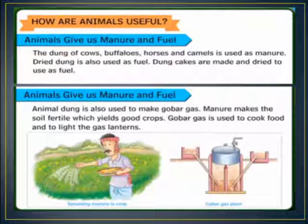The dung of cows, buffaloes, horses and camels is used as manure. Dried dung is also used as fuel — dung cakes are made and dried to use as fuel. Animal dung is also used to make gobar gas. Manure makes the soil fertile, which yields good crops. Gobar gas is used to cook food and to light gas lanterns.